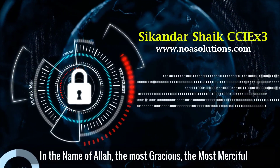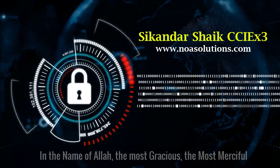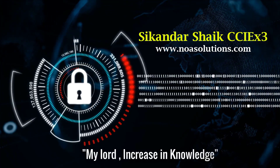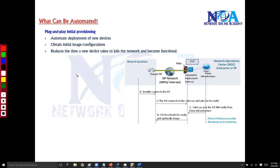Bismillah Ar-Rahman Ar-Rahim. Rabbi Zidni Ilma. Now we'll see what are the things that can be automated — an overview of the different types of tasks. Previously we have seen the different goals of automation, the automation types, and also the overview of SDN, the Software Defined Networking.